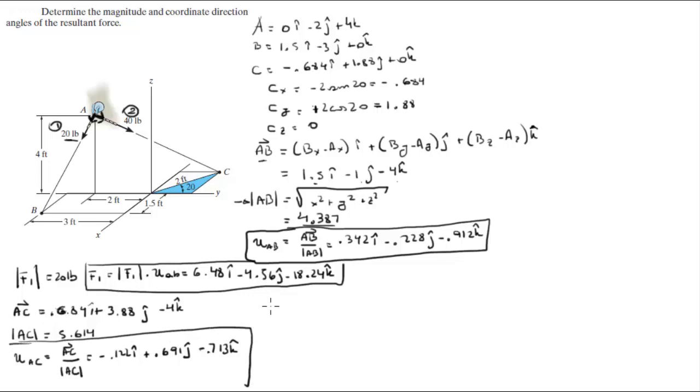We're given the magnitude of F2 at 40 pounds. To find the Cartesian vector form of F2 you just multiply the magnitude by the unit vector AC, and it comes out to be negative 4.88i plus 27.64j minus 28.52k.